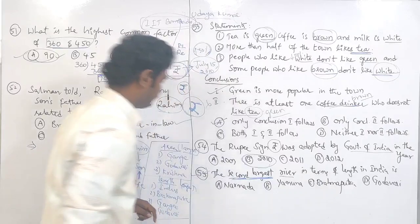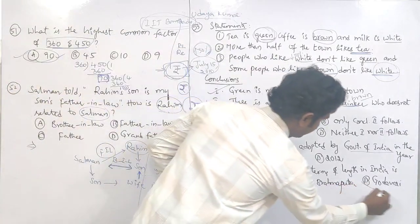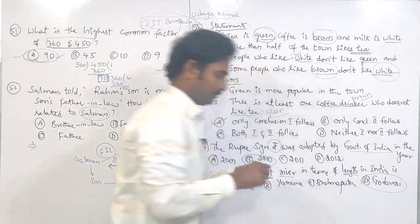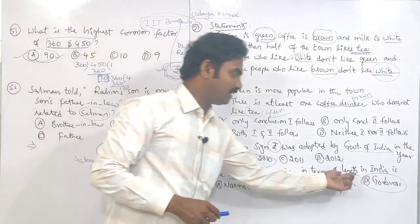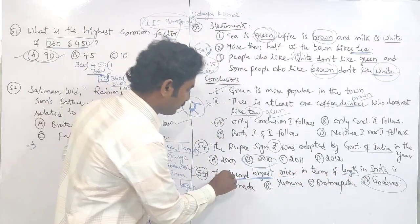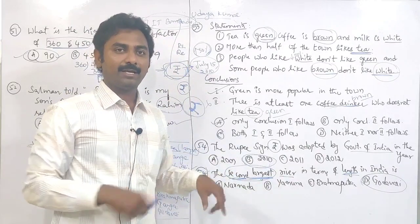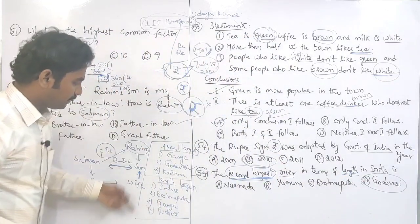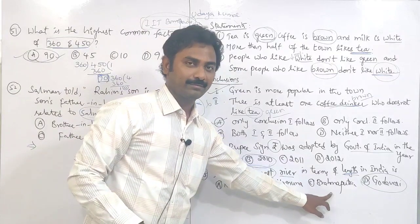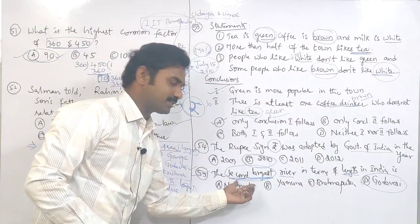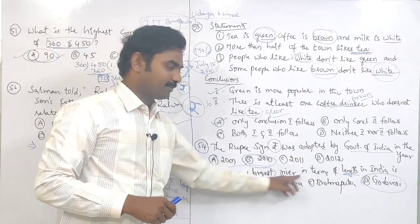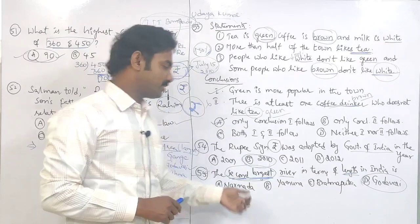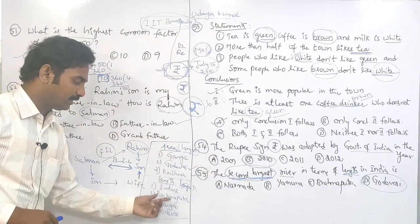The second largest river by area is Godavari. This is a very confusing question — what is asked is the second largest river. At the end he mentions length again, making it confusing. We should take only the starting point: 'second largest' means area-wise, and area-wise second largest is Godavari. If you take only length-wise, the second longest would be Brahmaputra. So be careful: largest means area-wise — Godavari; longest means length-wise — Brahmaputra.